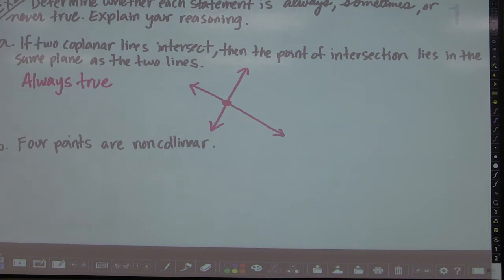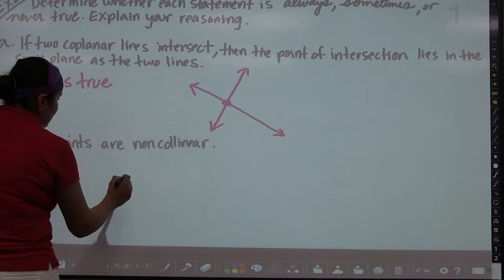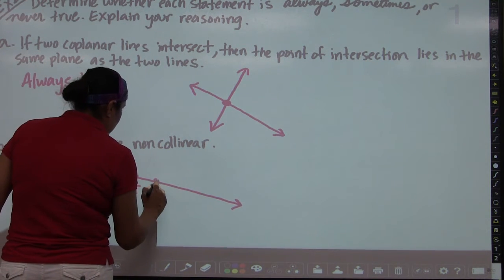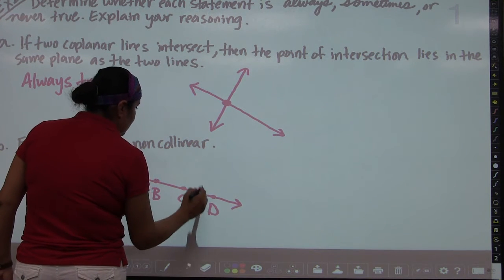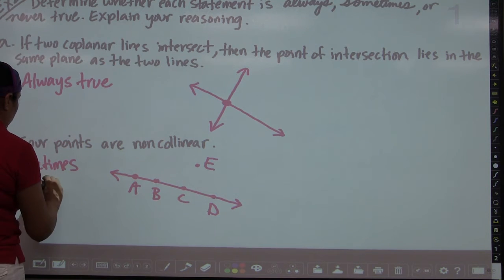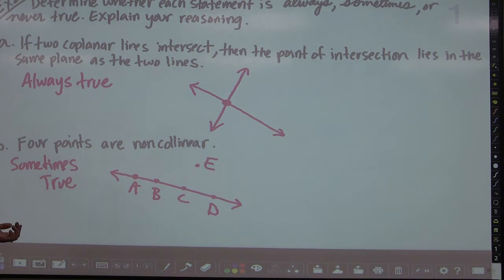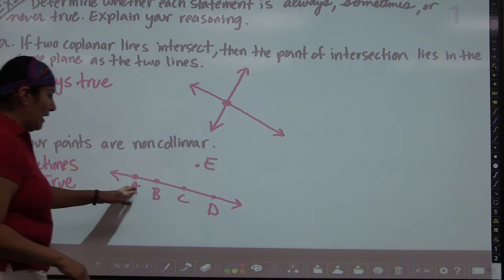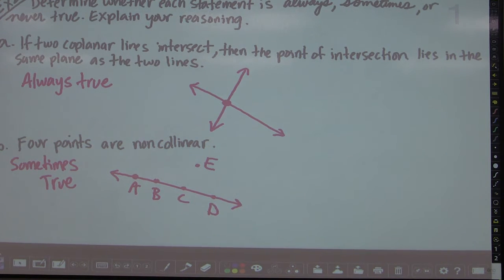Part B: Four points are non-collinear. This is sometimes true. For example, points A, B, C, E can be non-collinear, but points A, B, C, D could be collinear. Postulate 2.3 says a line contains at least two points, meaning a line can contain two or more points — so four points can be collinear or non-collinear.